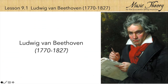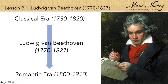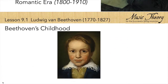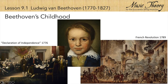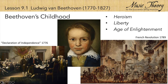Ludwig von Beethoven revolutionized classical music, and his innovative ideas mark the beginning of a new period in music called the Romantic Era. He grew up between the American and French revolutions and developed strong feelings about heroism and liberty, ideals that were common during the Age of Enlightenment.